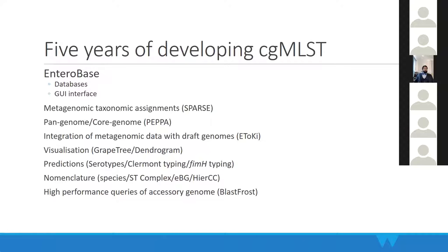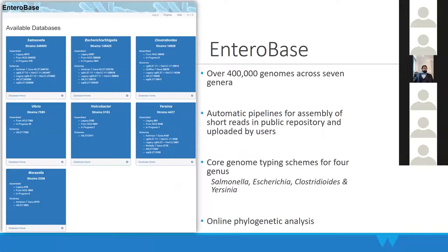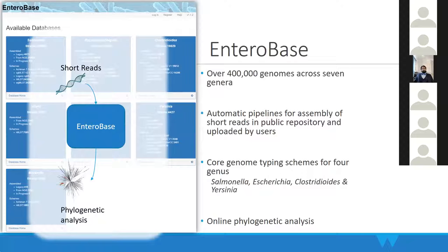Looking back at our five years of developing cgMLST, we built many different methods and saved most of our data in Enterobase. We have methods for metagenomic binning, pan-genome and core-genome reconstruction, software tools for assembling draft genomes, visualization tools, and many others. Summarizing all together: Enterobase currently has about seven databases in the public domain with over 400,000 genomes, and core typing methods for four different genera. The main idea is you feed in short reads and Enterobase gives you direct phylogenetic analysis.